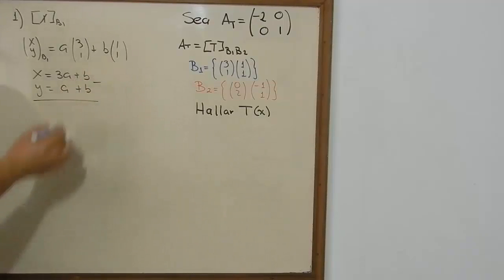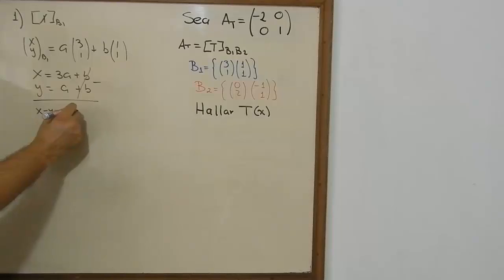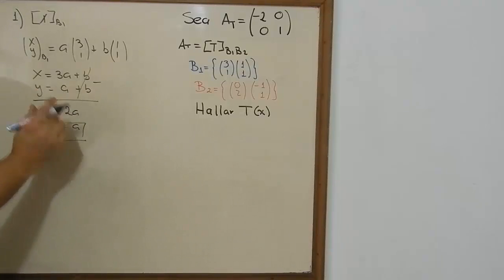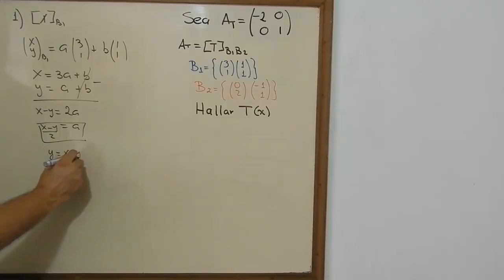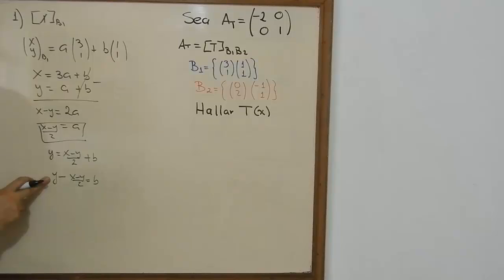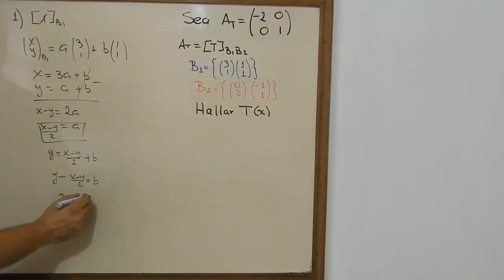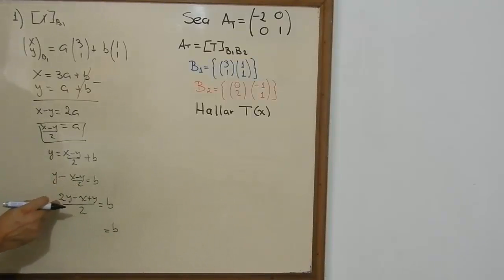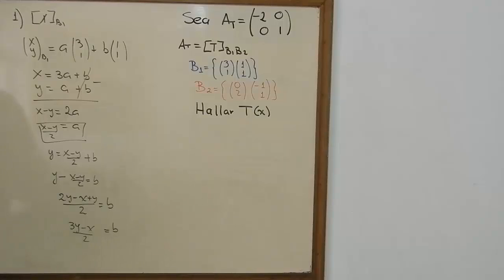We're going to do this math here. We're going to cancel out b by subtracting one equation from the other, and what we get is that a = (x − y) / 2. Now we replace a back into the second equation to solve for b. Multiplying through and combining terms, we get b = (3y − x) / 2. So now we have our vector.